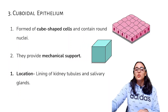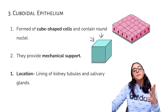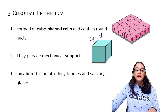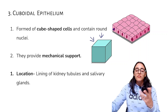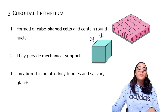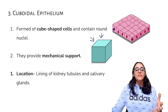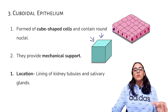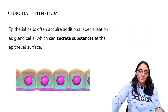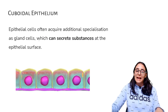Cuboidal epithelium is formed of cube-shaped cells with round nuclei. They provide mechanical support and are found in the lining of kidney tubules and salivary glands — the salivary glands in the mouth that secrete saliva.